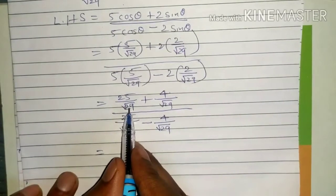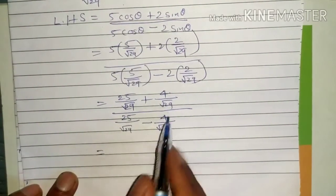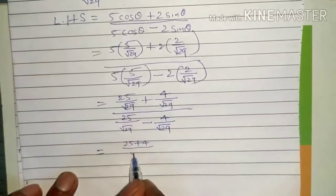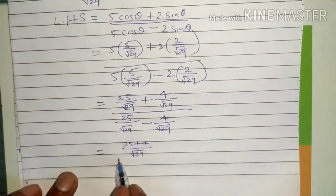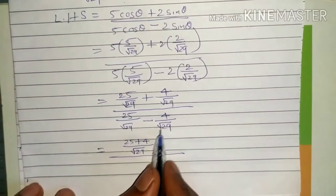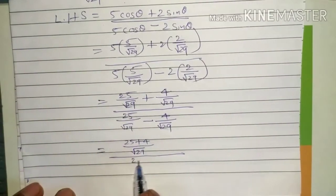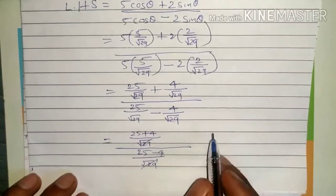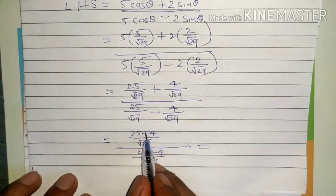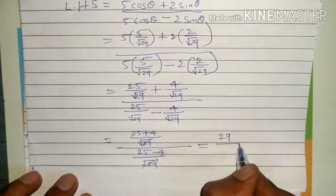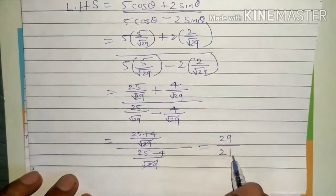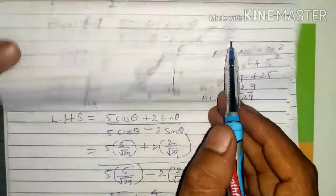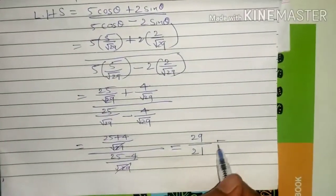That equals 25 by root 29 plus 4 by root 29 in the numerator, divided by 25 by root 29 minus 4 by root 29 in the denominator. Since the denominators are the same root 29, we add the numerators: 25 plus 4, and subtract for the denominator: 25 minus 4. The root 29 cancels, giving 29 divided by 21, which equals the RHS. Hence proved.